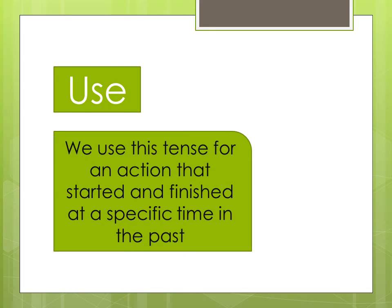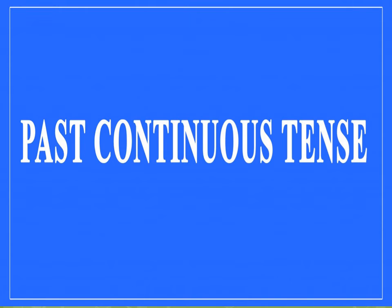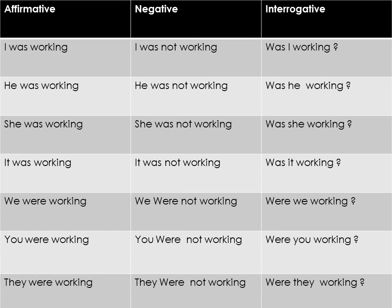We use this tense for an action that started and finished at a specific time in the past. Past continuous tense. Affirmative: I, he, she, it was working. We, you, they were working. Negative: I, he, she, it was not working. We, you, they were not working. Interrogative: Was I working? Was he, she, it working? Were we, you, they working? The same conjugation applies for any verb.